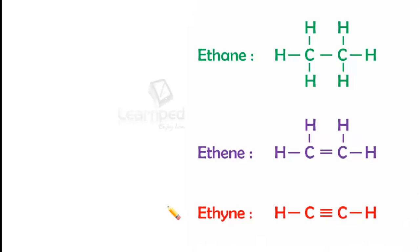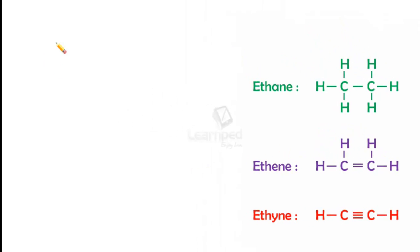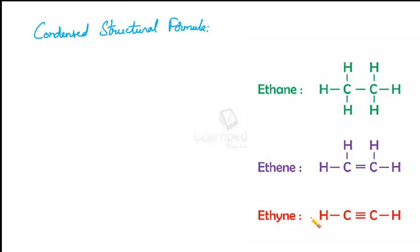This structural formula can be simplified further by omitting some or all the dashes representing the covalent bonds, and by indicating the number of identical groups attached to an atom by a subscript. This representation is called the condensed structural formula. Let's see the same three examples and write the condensed structural formulae for these.